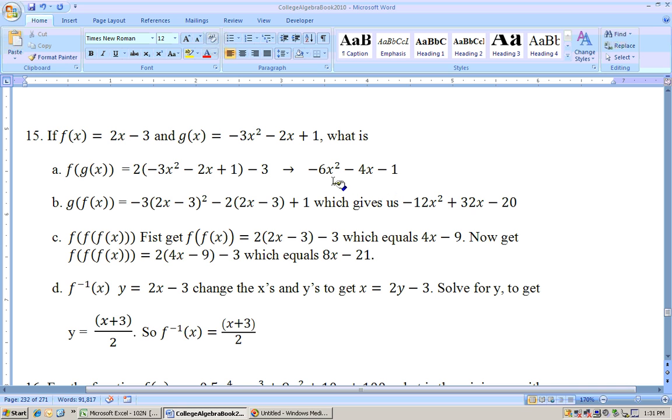g(f(x)) means put the f(x) function everywhere there's an x on the g function. So it will be -3 times that quantity, (2x - 3), that gets squared, -2 times x, which we're substituting in, (2x - 3), and then finish it off, +1.